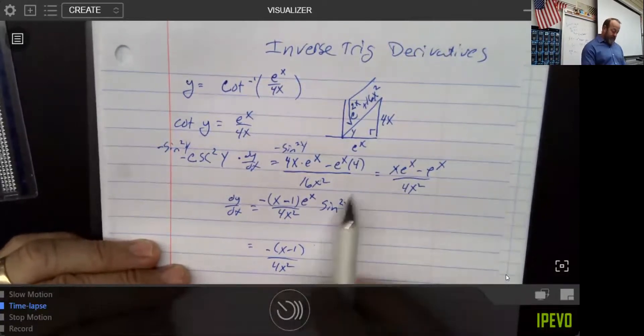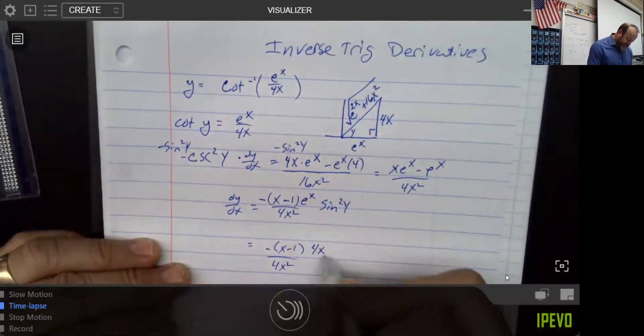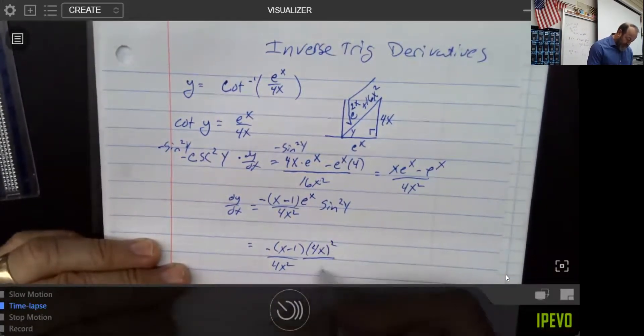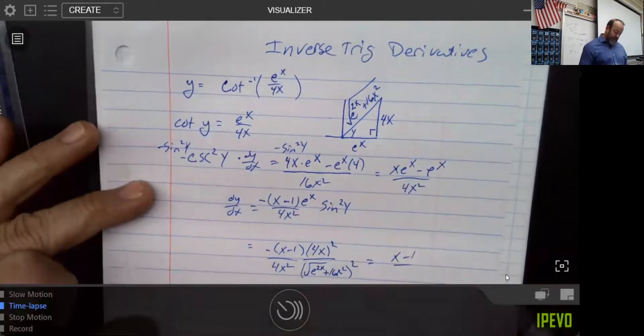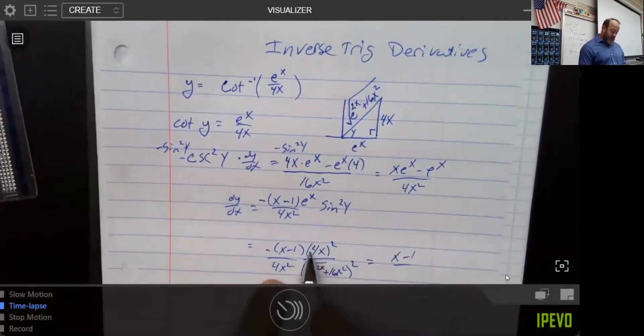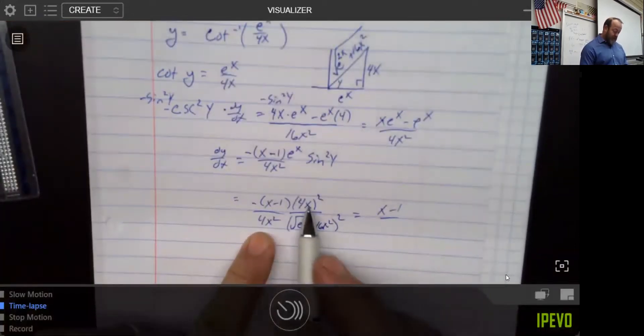Remember, sine squared is opposite over hypotenuse, so that would be opposite over hypotenuse squared. A nice thing that just happened is I still have my x minus 1, 4x squared. This is actually 16x squared divided by 4x squared.